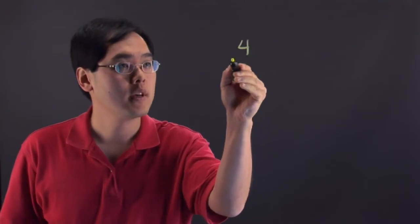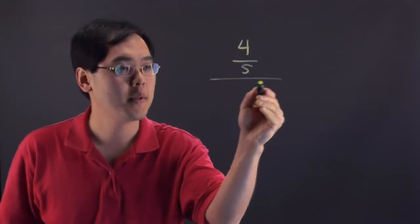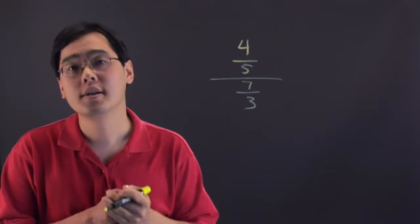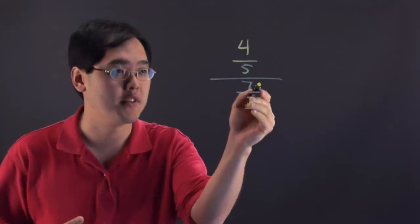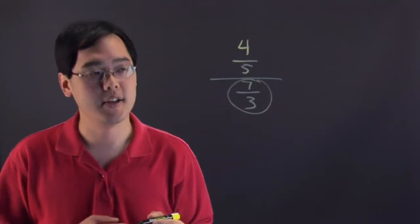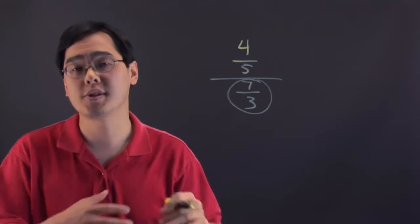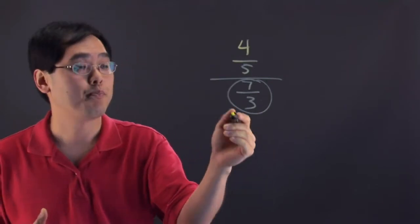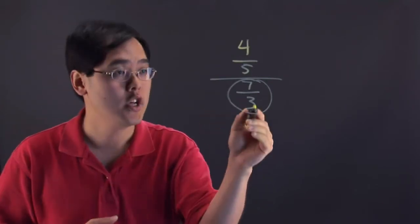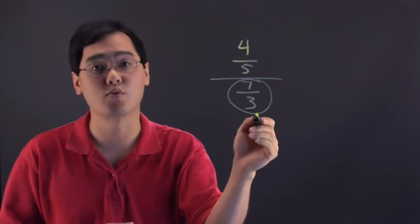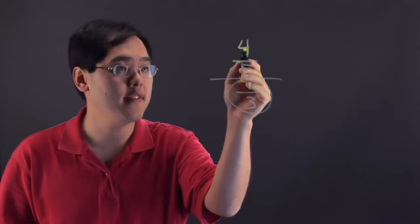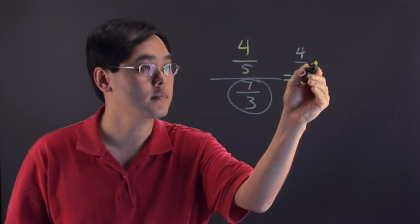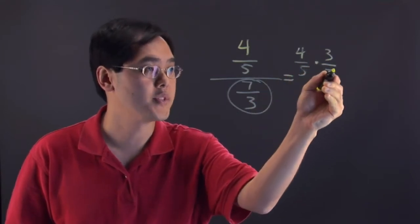Suppose you have a situation where you have 4 fifths divided by 7 thirds. Dividing fractions really involves multiplication — you just have to think about what the denominator is. The denominator is 7 thirds. So when we're talking about reciprocating the denominator, we're talking about finding the reciprocal of it. The reciprocal, of course, is flipping the fraction, so the reciprocal of 7 thirds is 3 sevenths. Instead of dividing 4 fifths by 7 thirds, you're actually multiplying 4 fifths by the reciprocal, 3 sevenths.